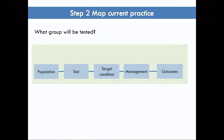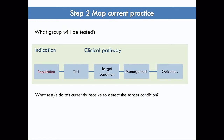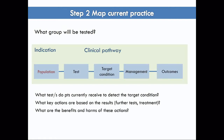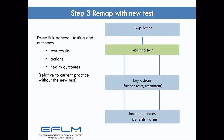The next step is to map out state-of-the-art current practice. What group will be tested? What's the indication for the test — the population and setting? The questions to defining the clinical pathway are: what tests do patients currently receive to detect the target condition? What are the main actions based on those test results that have an impact on outcomes — further tests and treatment? What are the benefits and harms of those actions? What's the gap the new test will address? Join the dots back from where this new test is expected to provide intended benefits, then remap the pathway with the new test.